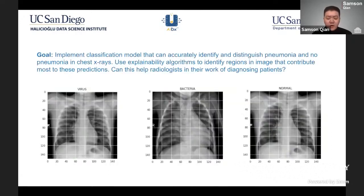The overarching goal of this research is to take various chest X-rays of patients who have bacterial or viral pneumonia, as well as healthy patients, and build a machine learning model to classify between these patients using these images. And so the question is: is it possible to build a machine learning model that can accurately identify these different classes, but also interpret this model to understand where it is looking when generating its predictions?